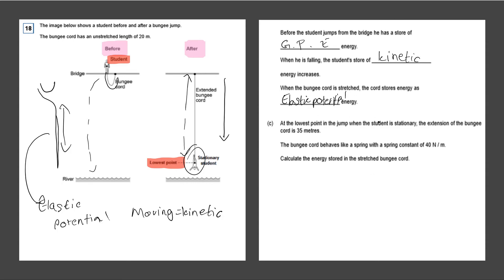At the lowest point in the jump, when the student is stationary, the extension of the bungee cord is 35 meters. So we know the extension. The bungee cord behaves like a spring with a spring constant of 40 N per meter. We know the spring constant as well.